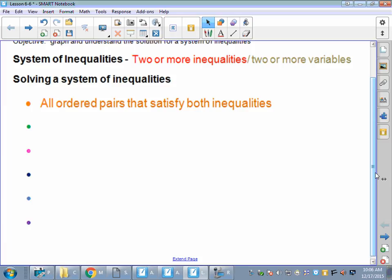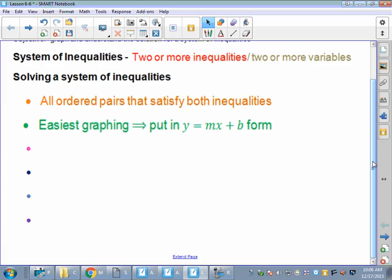So it's all ordered pairs. It's kind of a fuzzy answer. There isn't anything specific you can write on the answer line on a quiz or a test or homework, because all we can do is look for everything that satisfies both of them.